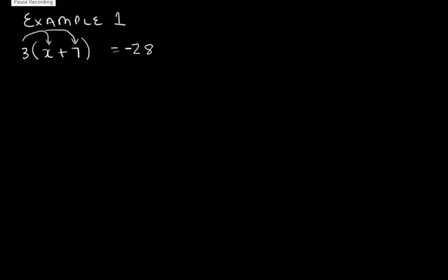We need to multiply 3 by x and 3 by 7. 3 times x is 3x and 3 times 7 is 21.